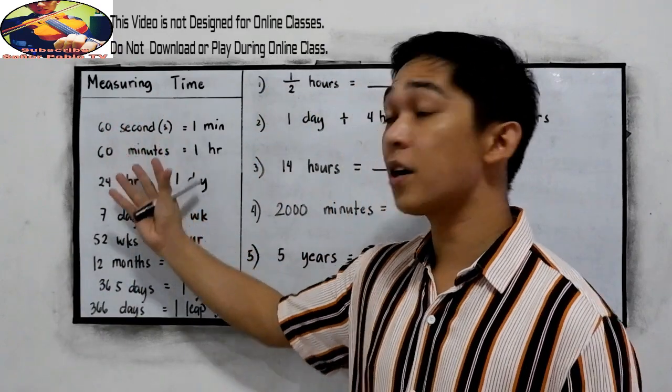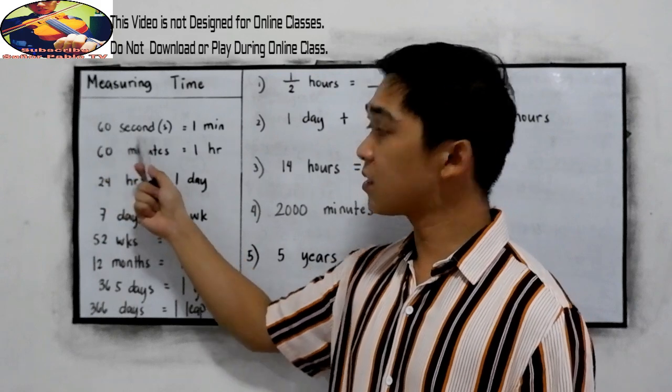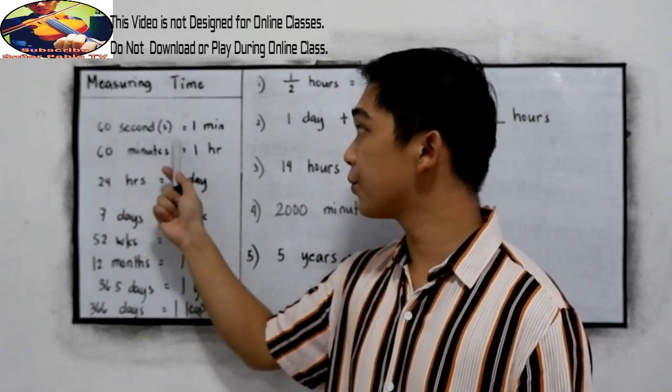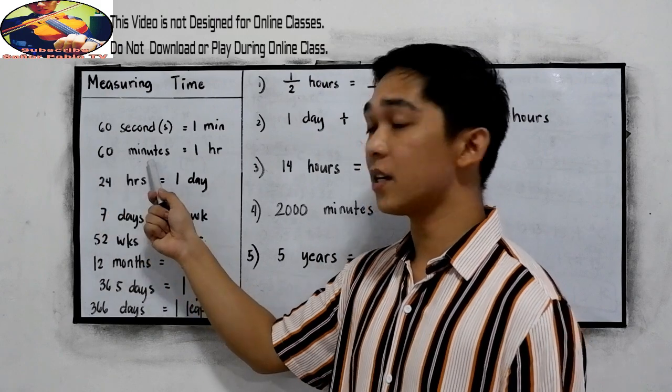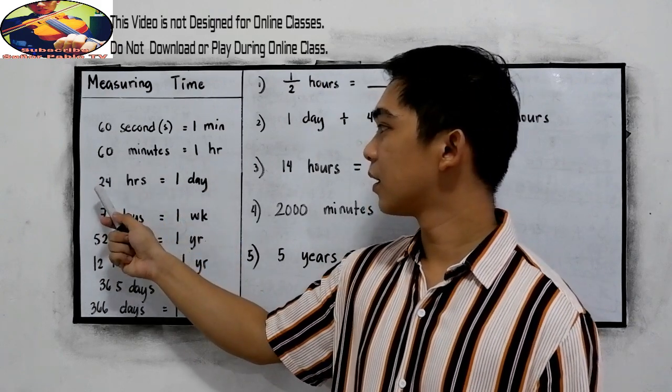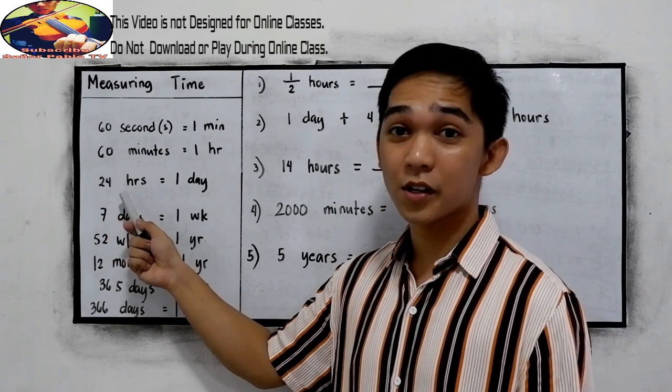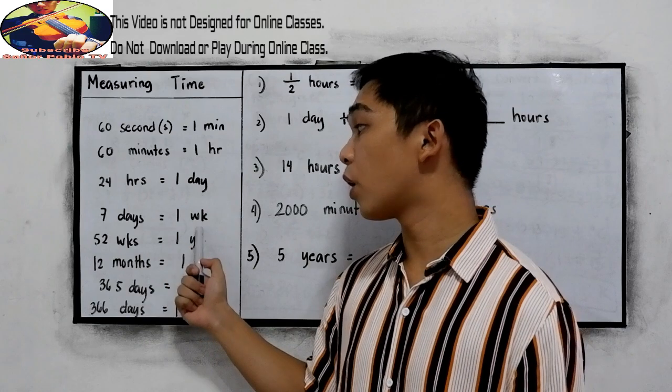These are the conversions that you are going to use. 60 seconds is equal to 1 minute. 60 minutes is equal to 1 hour. 24 hours is equal to 1 day. 7 days is equal to 1 week.